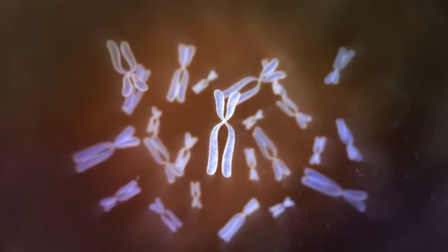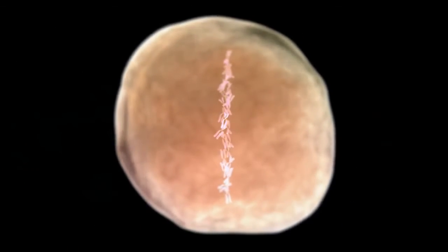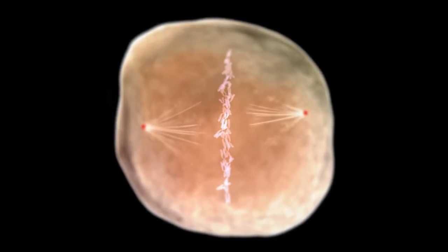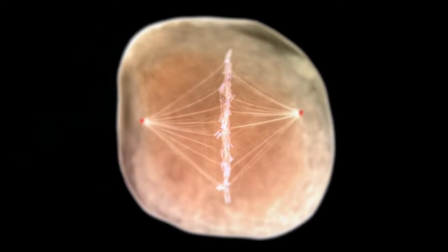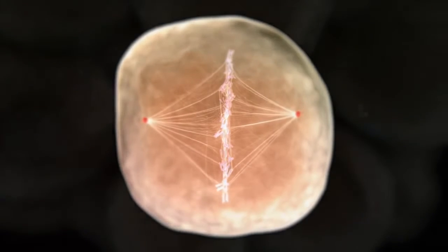During cell division, the replicated DNA condenses to form an organized structure known as a chromosome. As the nuclear membrane dissolves, the chromosomes line up along the center of the cell and attach to spindle fibers that extend from the cell's centrioles.